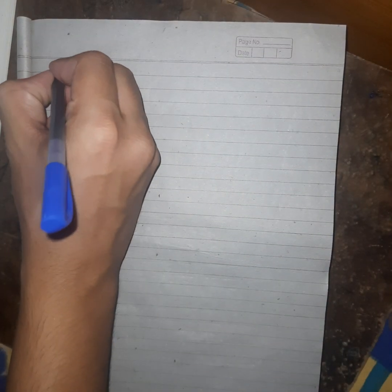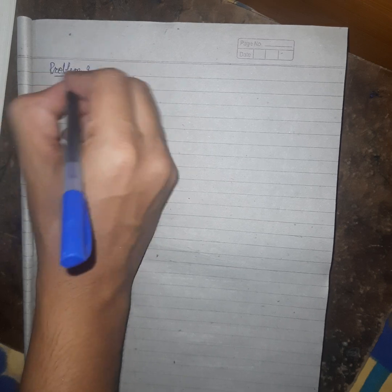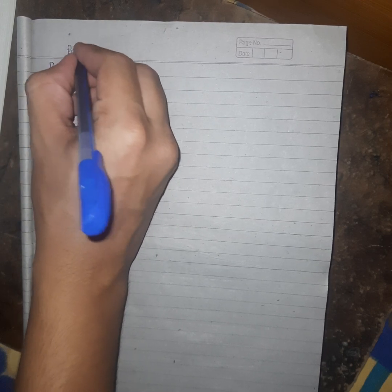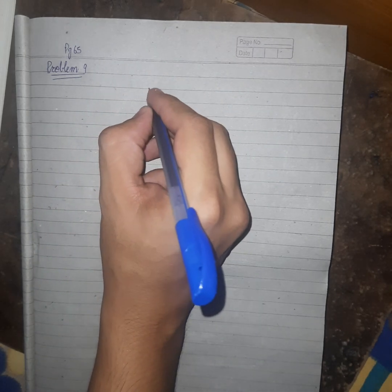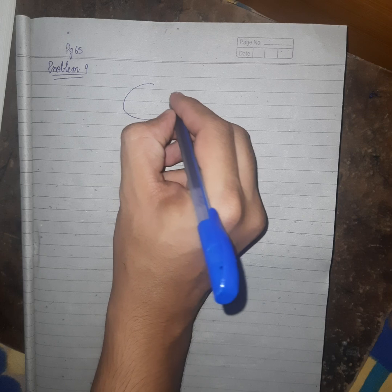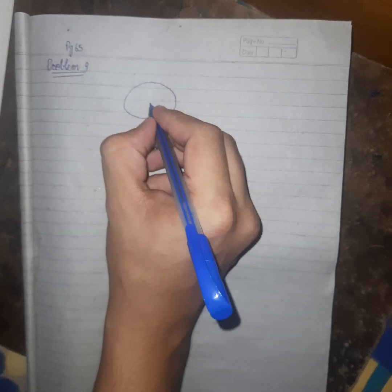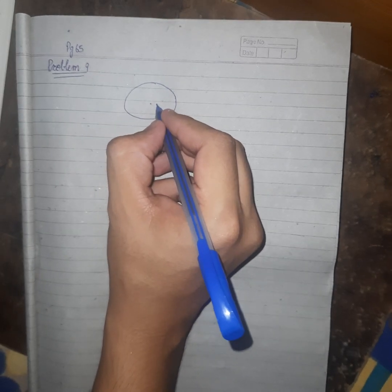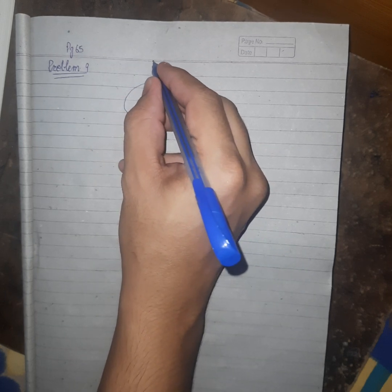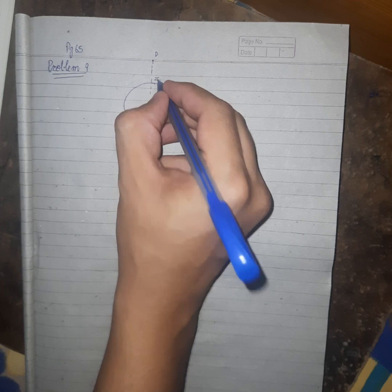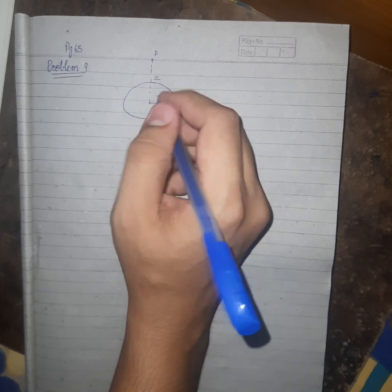Problem number 5, page 65. Alright, so first of all let's draw the diagram. This is a circular loop.